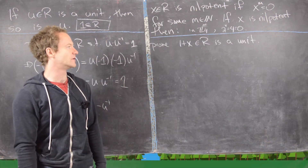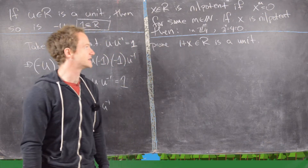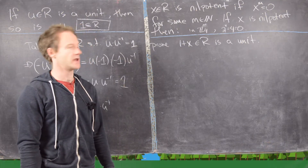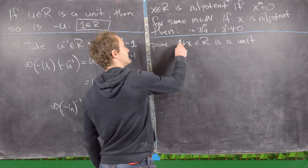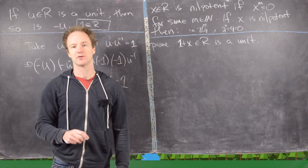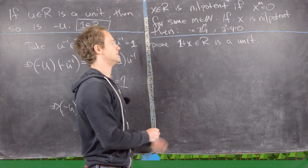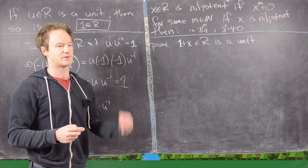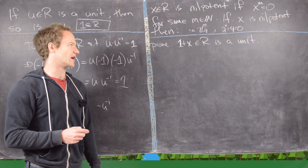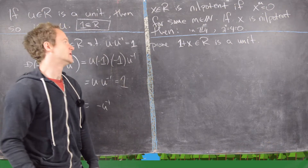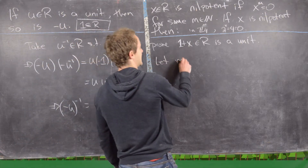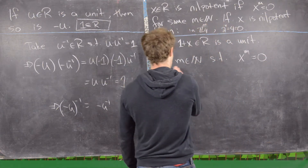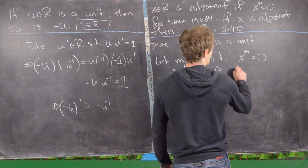The next thing to prove about nilpotent elements is that if you have a nilpotent element in a ring with 1, and you take the identity element 1 and add it to x, that gives you a unit. This is easy if you know the trick, which is motivated by knowledge of polynomial factorization. Let m be the minimum natural number such that x to the m equals 0.